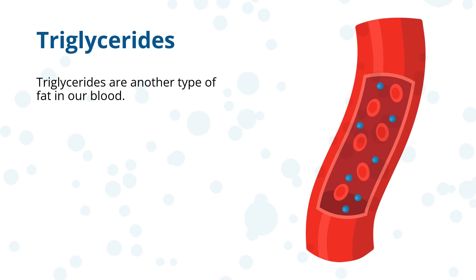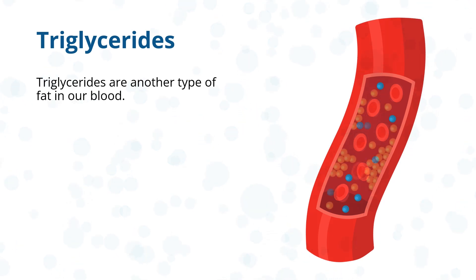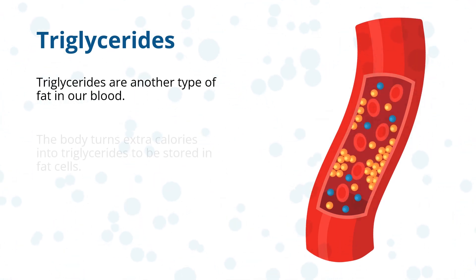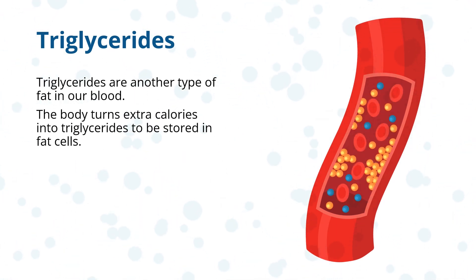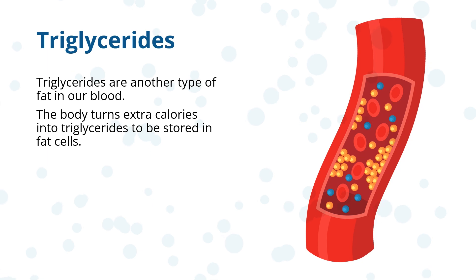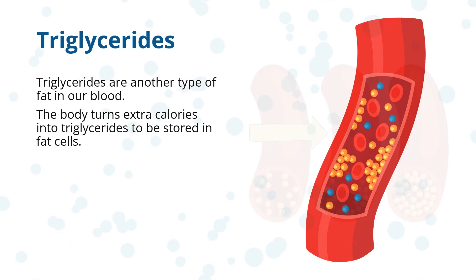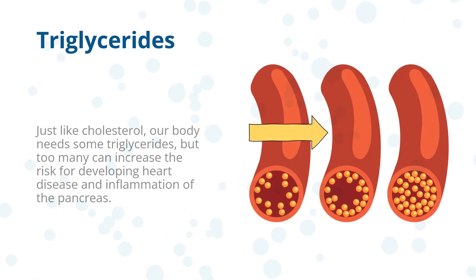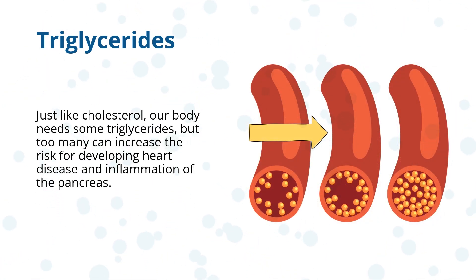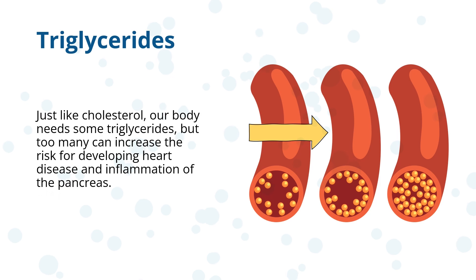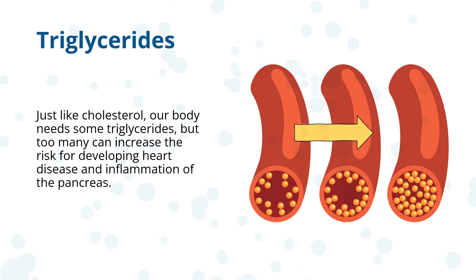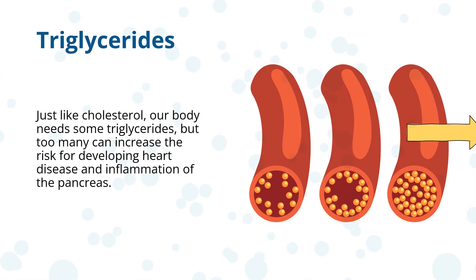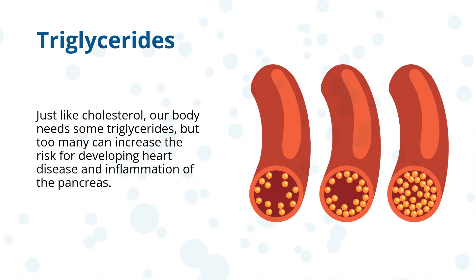Triglycerides are another type of fat in our blood. The body turns extra calories into triglycerides to be stored in fat cells. Just like cholesterol, our body needs some triglycerides, but too many can increase the risk for developing heart disease and inflammation of the pancreas.